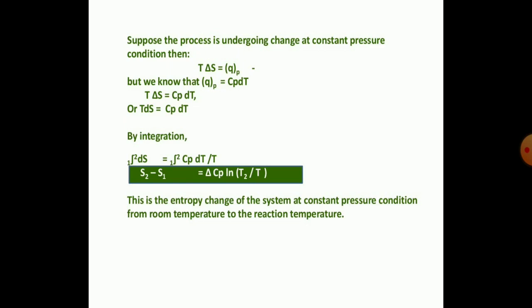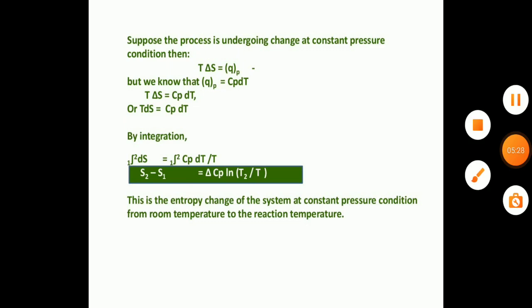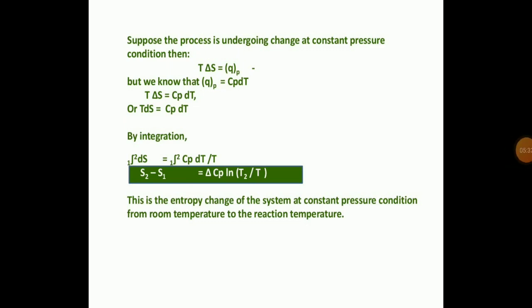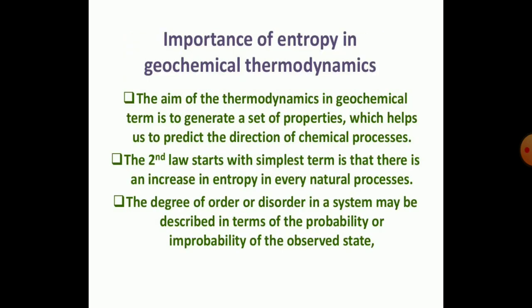This is the entropy change in a system at constant pressure conditions, from room temperature to reaction temperature. The calculation of entropy change depends on the molecular structure of the system. In geochemical thermodynamics, the aim is to generate a set of properties that help predict the directions of chemical processes. The second law states that in the simplest terms there is an increase in entropy in every natural process.